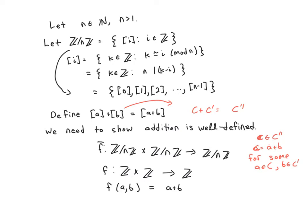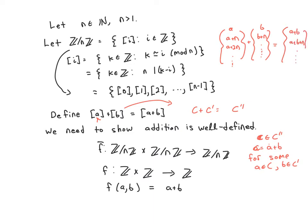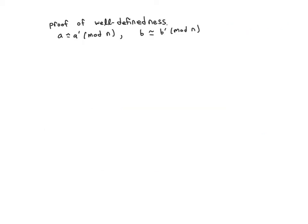The key idea is that [a] is actually not just one number — it's an entire set of numbers, and same with [b]. The question is to show that it doesn't matter which element you pick from column a and which element you pick from column b; the answer is always going to be something in column c. So in other words, if a is congruent to a prime and b is congruent to b prime, I need to show a plus b is congruent to a prime plus b prime.